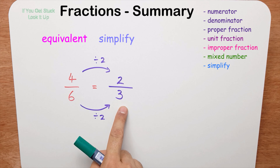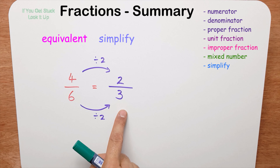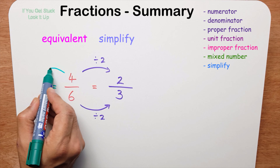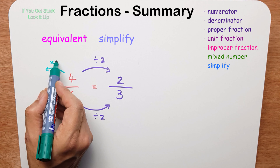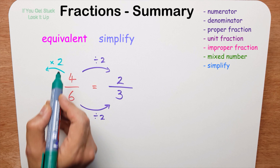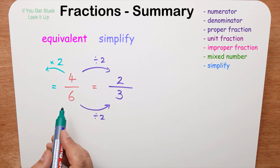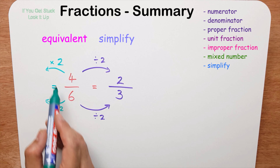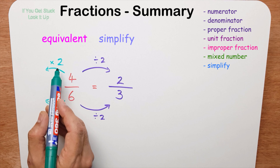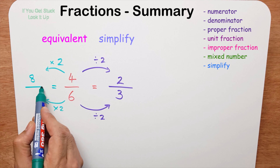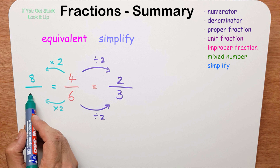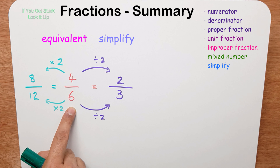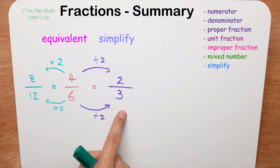Four-sixths and two-thirds are equivalent fractions — they both have the same value. I can also find an equivalent fraction by multiplying. I could multiply by two, and whatever I do to the numerator I have to do to the denominator. Four times two is eight, six times two is twelve. So eight-twelfths is equivalent to four-sixths, which is equivalent to two-thirds.